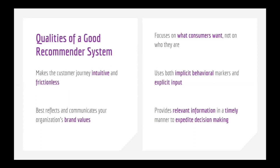Just from the amount of exclamation marks in this piece of feedback, you can see how happy and excited the customer was after the experience. What we really thought was that we want to use this as our North Star. We really want to think about how can we create the kinds of recommendations online that would elicit the same kinds of enthusiasm from our consumers when they use these recommendations. We did a lot of consumer research and studies, and we really distilled the five most important properties that a good recommender system should have. First, it should make the customer journey intuitive and frictionless. Second, it should really reflect the brand's values. It should focus primarily on what consumers want and not on who they are necessarily. It should use both implicit behavioral markers and explicit input from the user. And it should also provide relevant information in a timely manner to really expedite the decision making.